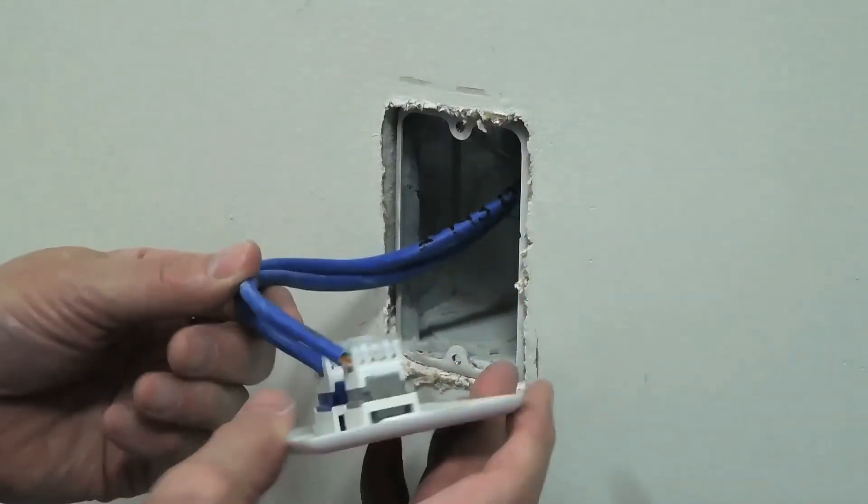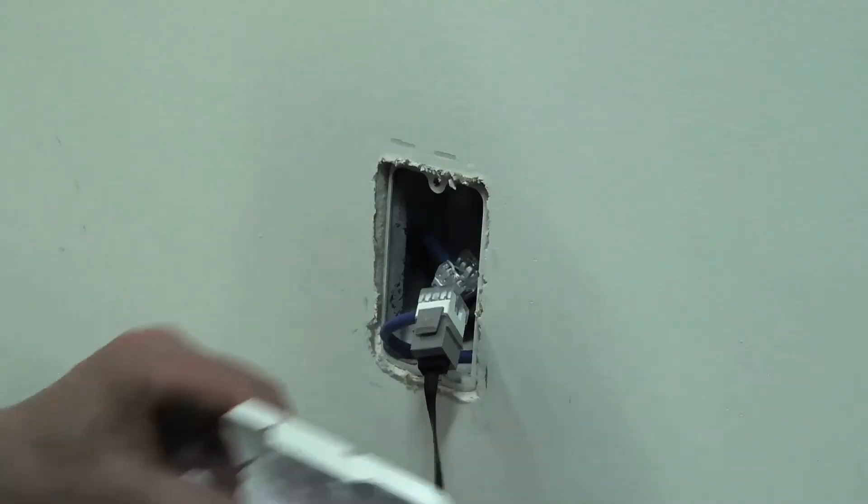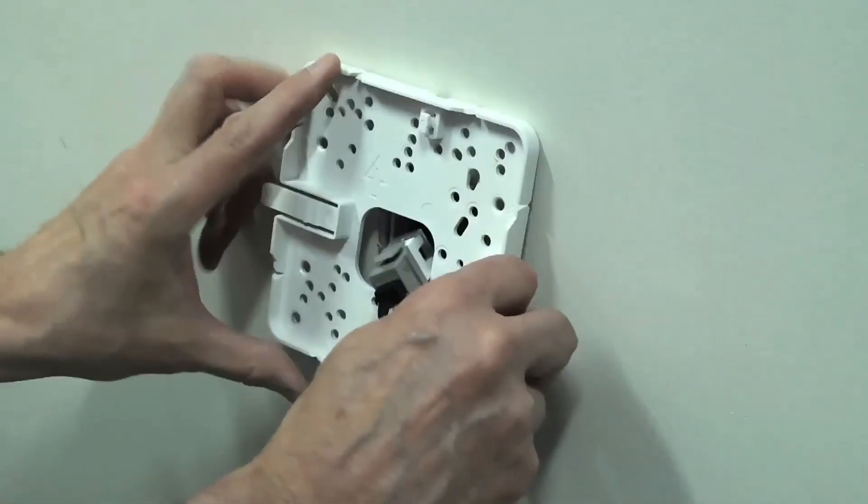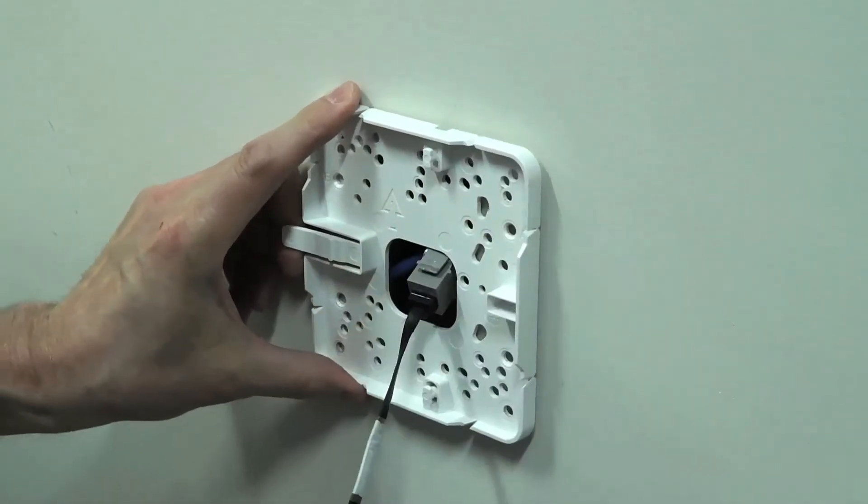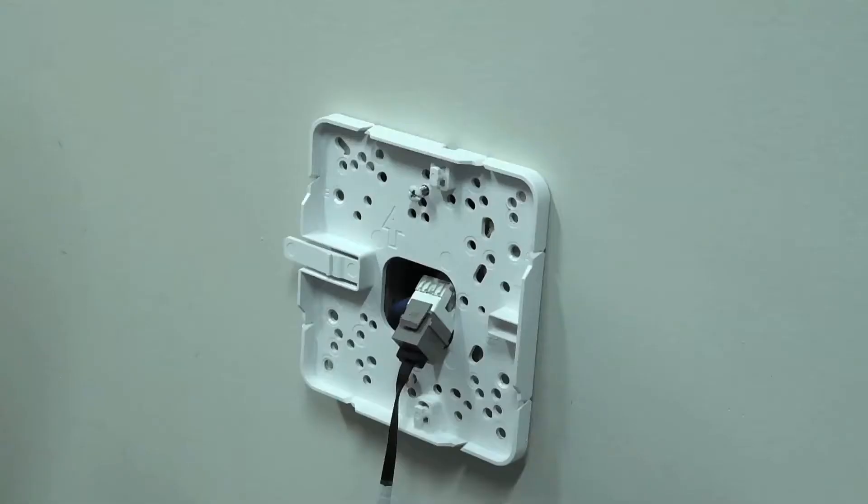With the bracket in the correct orientation, find two holes that line up with the screw holes in the box. The holes should be on opposite sides of the large central cut. Fasten the bracket to the box using the screws from the wall plate and the selected holes.